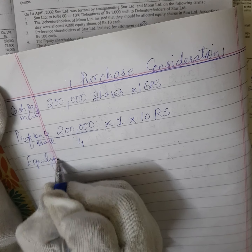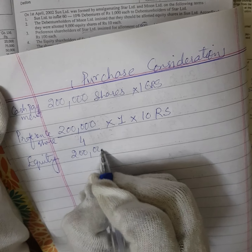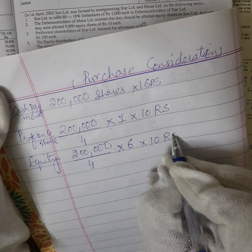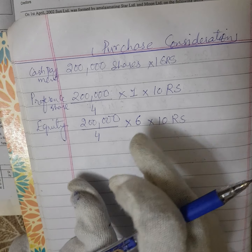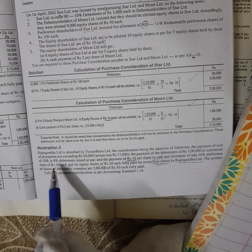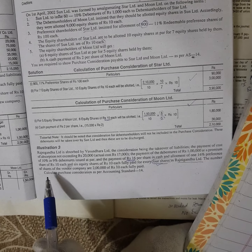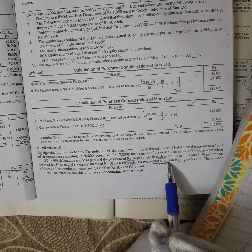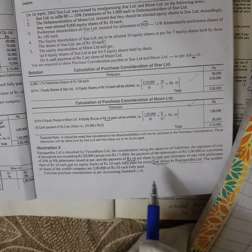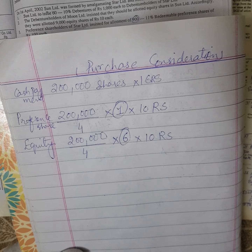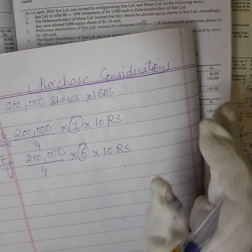Equity shares ke liye bhi yahi logic hai: two lakh shares ko 4 par divide karo, jitne units banenge, unke badle 6 equity shares milenge of ₹10 each. Yani: two lakh ÷ 4 = 50,000 units × 6 shares × ₹10. Ek preference share milega aur six equity shares milenge for every four shares in Rajni Gandha.